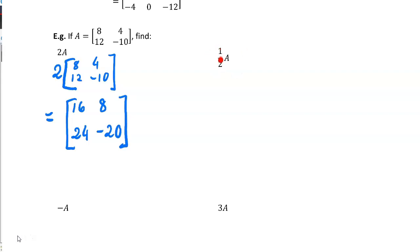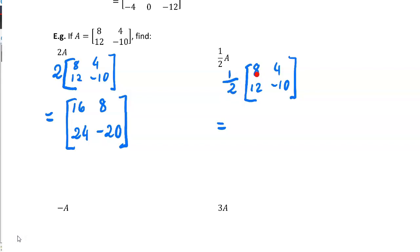In this example I've got one half times by matrix A — that's the matrix with eight, four, twelve, negative ten. When you multiply a number by a fraction, it's the same as dividing by the denominator. So half times eight is four, half times four is two, half of twelve is six, and half of negative ten is negative five.